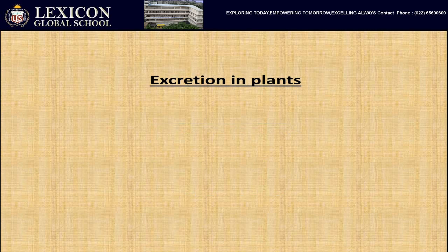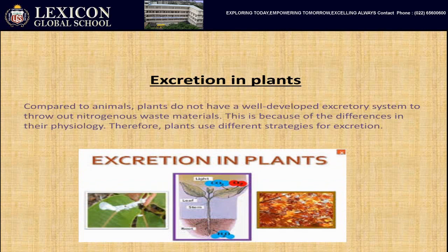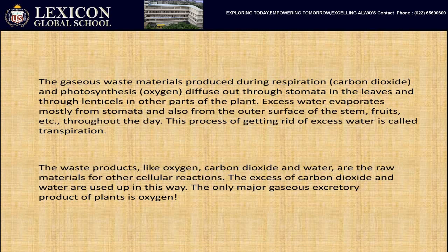This was all about excretion in humans. Now let us study how excretion takes place in plants. Compared to animals, plants do not have a well-developed excretory system to throw out nitrogenous waste materials, because of the difference in their physiology. Therefore, plants use different strategies for excretion. The gaseous waste materials produced during respiration and photosynthesis diffuse out through stomata in the leaves and through lenticels in other parts of the plant.